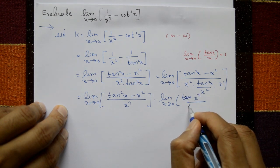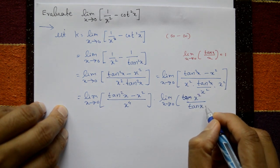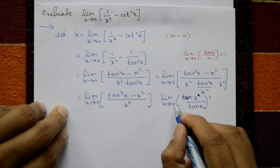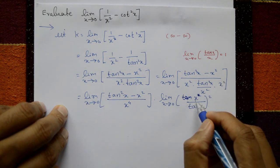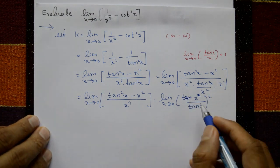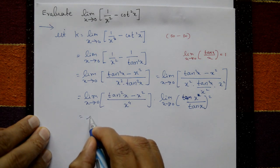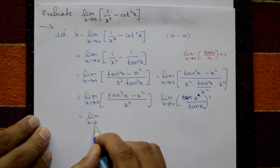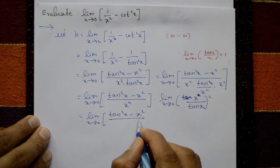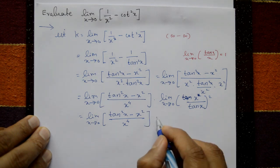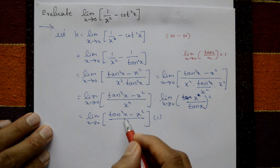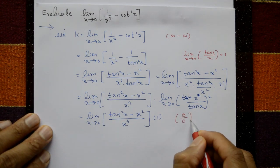Rewriting: limit x tends to 0 of (tan²x minus x²) / x⁴ into (x/tan x)² whole square. Since limit of x/tan x equals 1, this becomes limit x tends to 0 of (tan²x minus x²) / x⁴ into 1.